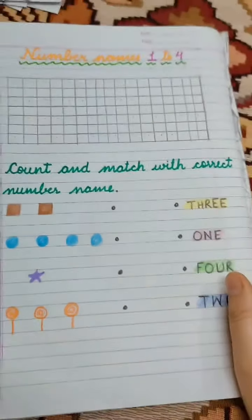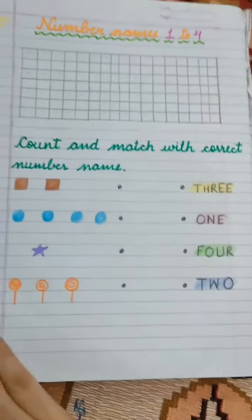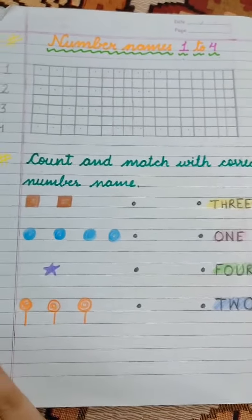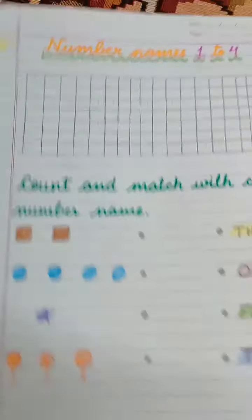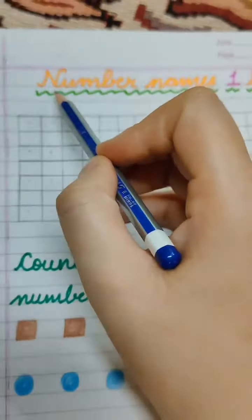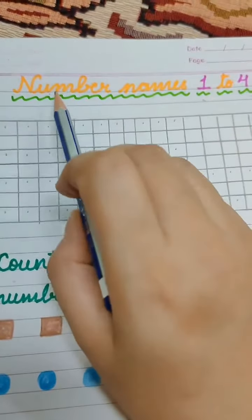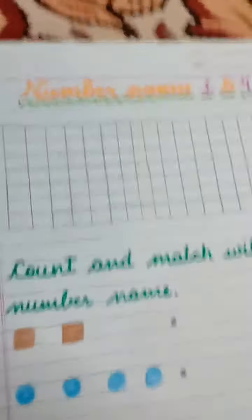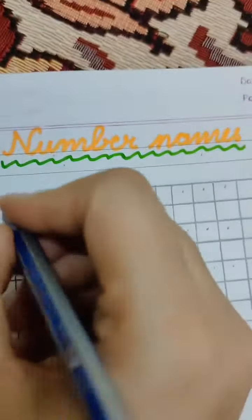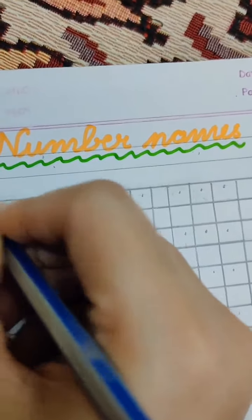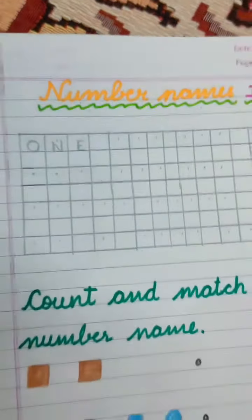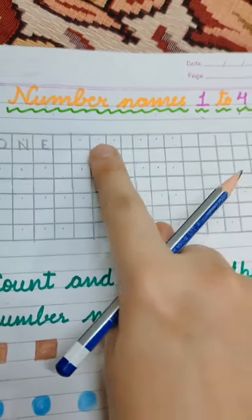Hey kids! This is the work that we are going to do today. First of all, look at the work carefully. Your mama and papa can draw it at home, okay? Now let's come to exercise number 1. We are going to revise the number names from 1 to 4. As I have already taught you this, let's start the spelling of 1 — O-N-E, 1. We are going to revise the same spelling 3 times, okay?